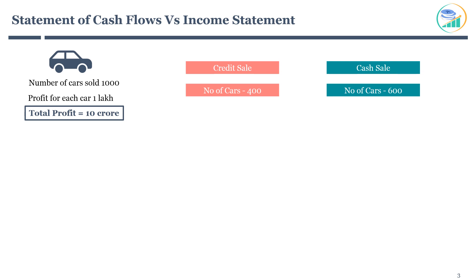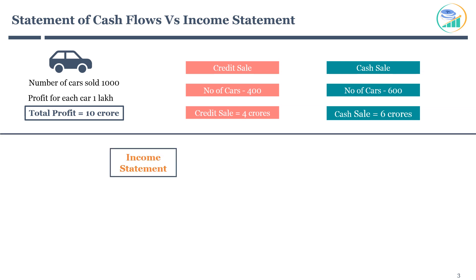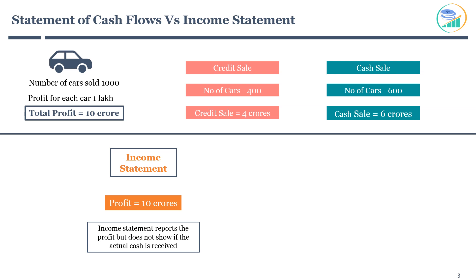The profit for credit sale would be 4 crores, while the profit for cash sale is 6 crores. Now, let's understand how the income statement will look for this business. The company will report a profit of 10 crores; however, the portion of sale done on credit is not reflected in the income statement.